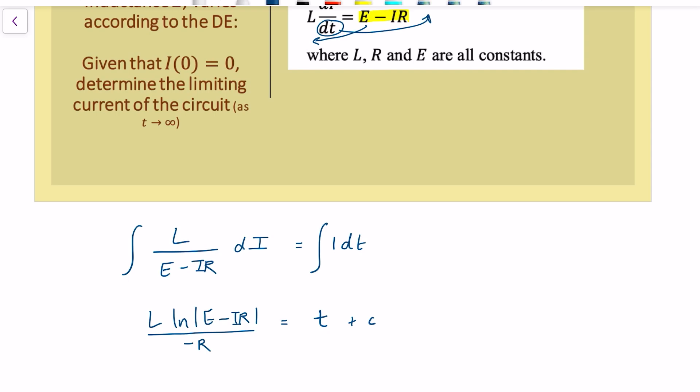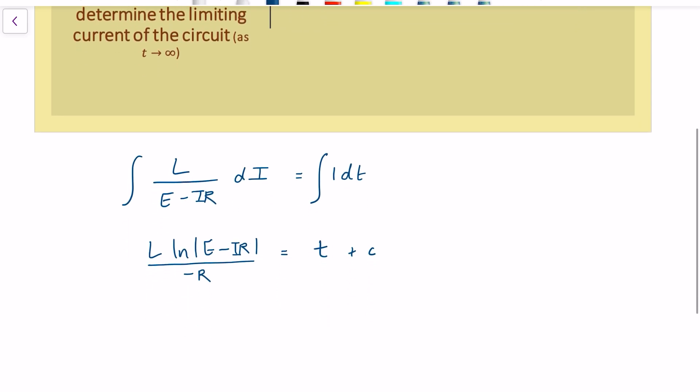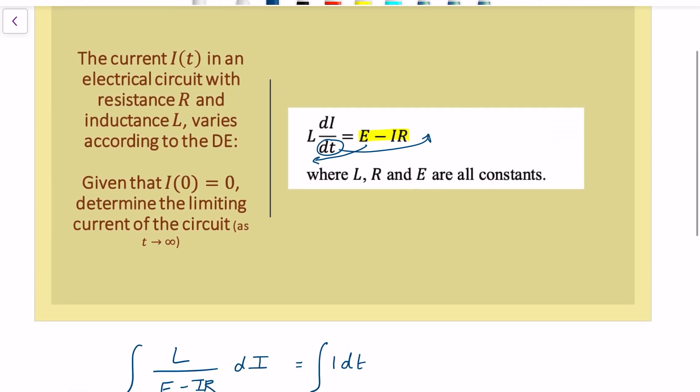We're told that the current of the circuit is 0 when time is 0. So if we substitute into the current thing we sub in 0 into there and we sub in 0 into there then we end up getting C. Well I shall write that I of 0 equals 0 therefore C is equal to L, capital L for the inductance, ln the absolute value of E.